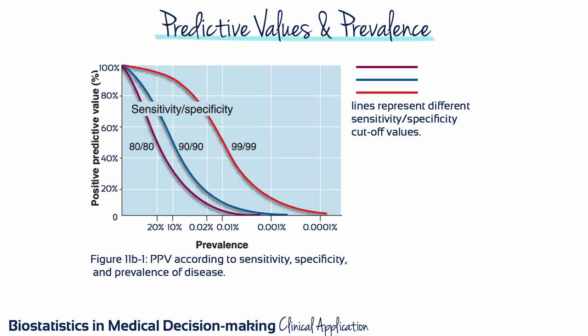Prevalence is usually more important than sensitivity and specificity in determining predictive value. One reason why this is so is that prevalence can vary over a much wider range — from 1 in 1 million to less than 1 in 10, depending on the age, gender, risk factors, and clinical findings of the patient. In contrast, sensitivity and specificity of diagnostic tests usually vary over a much narrower range, from about 50 to 99%.